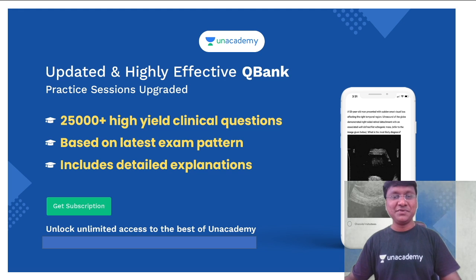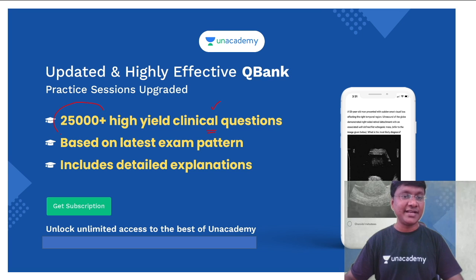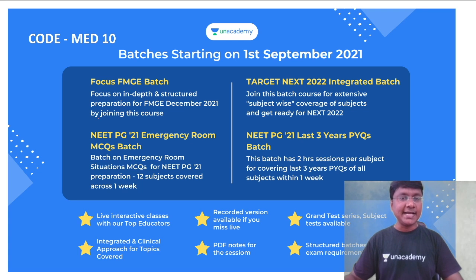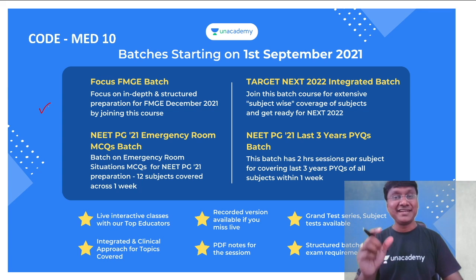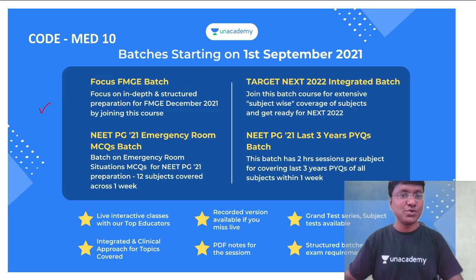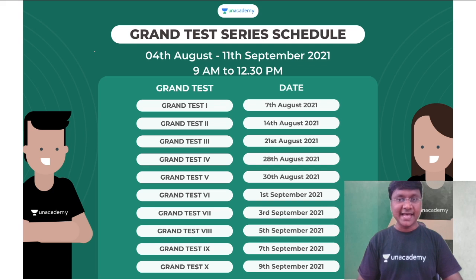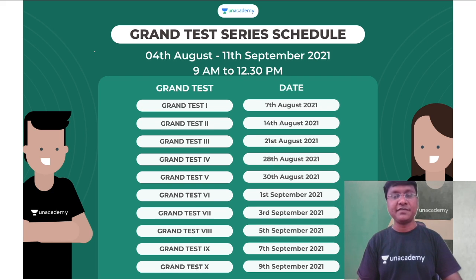Before starting the session, let me give you updates from AN Academy. AN Academy has come up with a very important question bank which exclusively contains clinical questions — nearly around 25,000 plus high-yielding clinical questions. AN Academy is also starting batch courses useful for students appearing for NEET PG and the FMG exam. Students who want to subscribe can use my code 'MED10' to get an additional 10% discount. These grand test series are already available on the AN Academy platform for NEET PG aspirants.